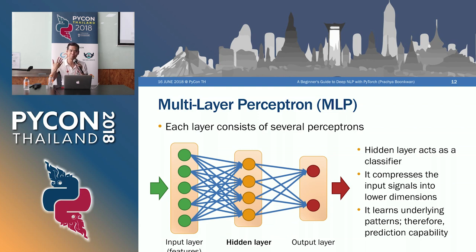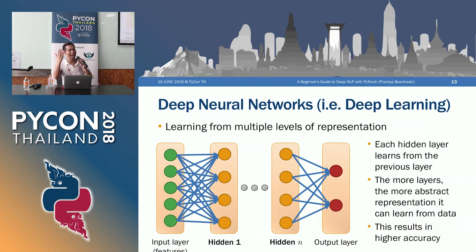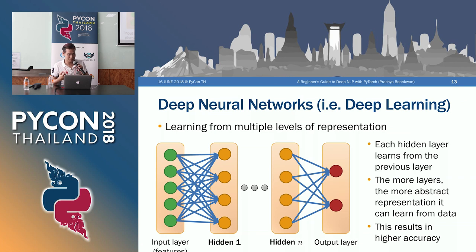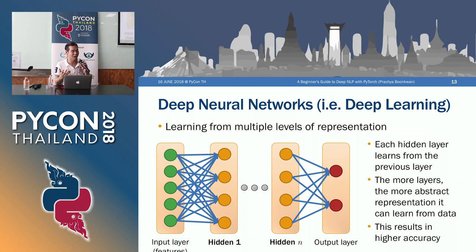If you compose all perceptrons into layers, you get the input layer and a hidden layer as a classifier. The hidden layer compresses the input signals into patterns of features and fires the output to the output layer. That's the basic idea of a multilayer perceptron, or MLP. If you add more hidden layers into the network, it becomes a deep neural network — that's the definition: more than one hidden layer.